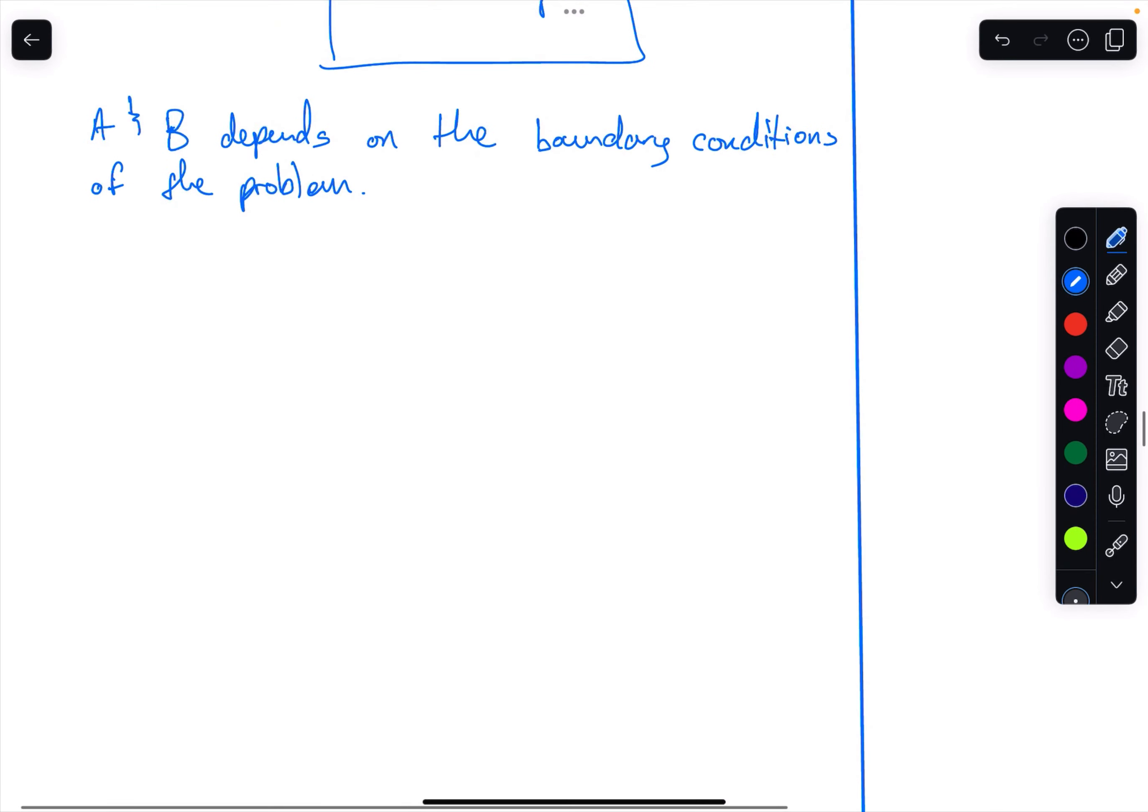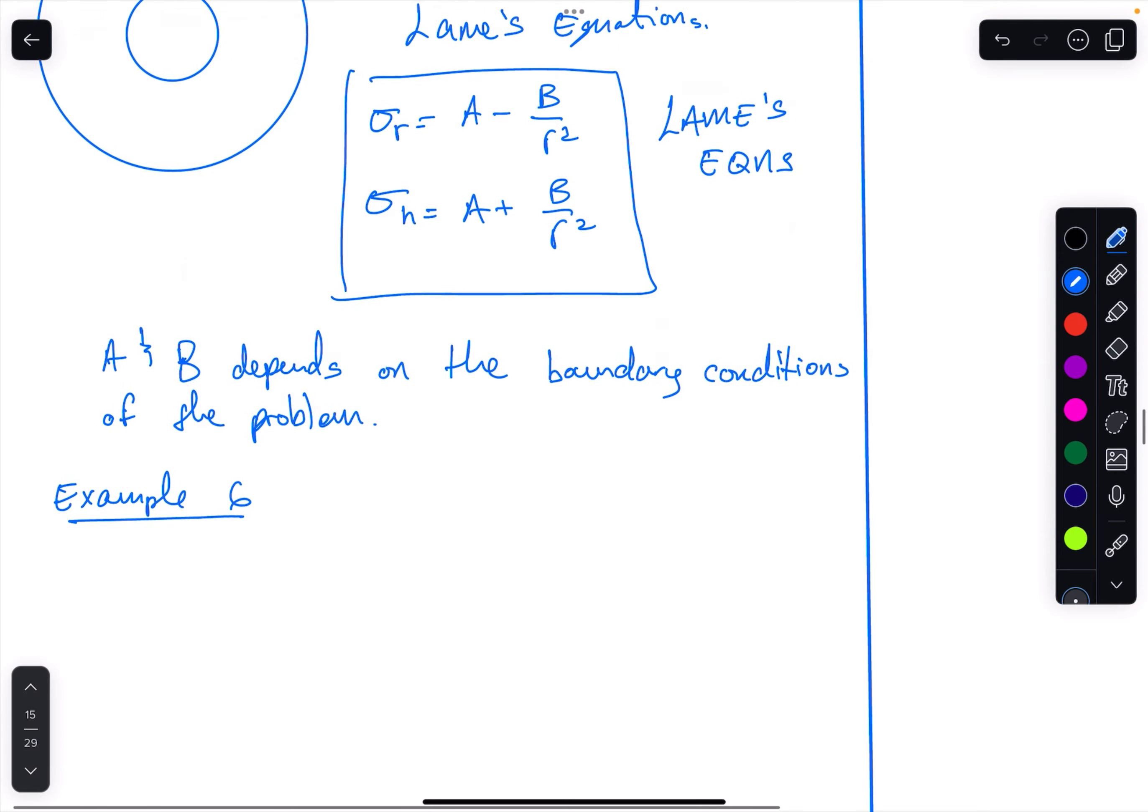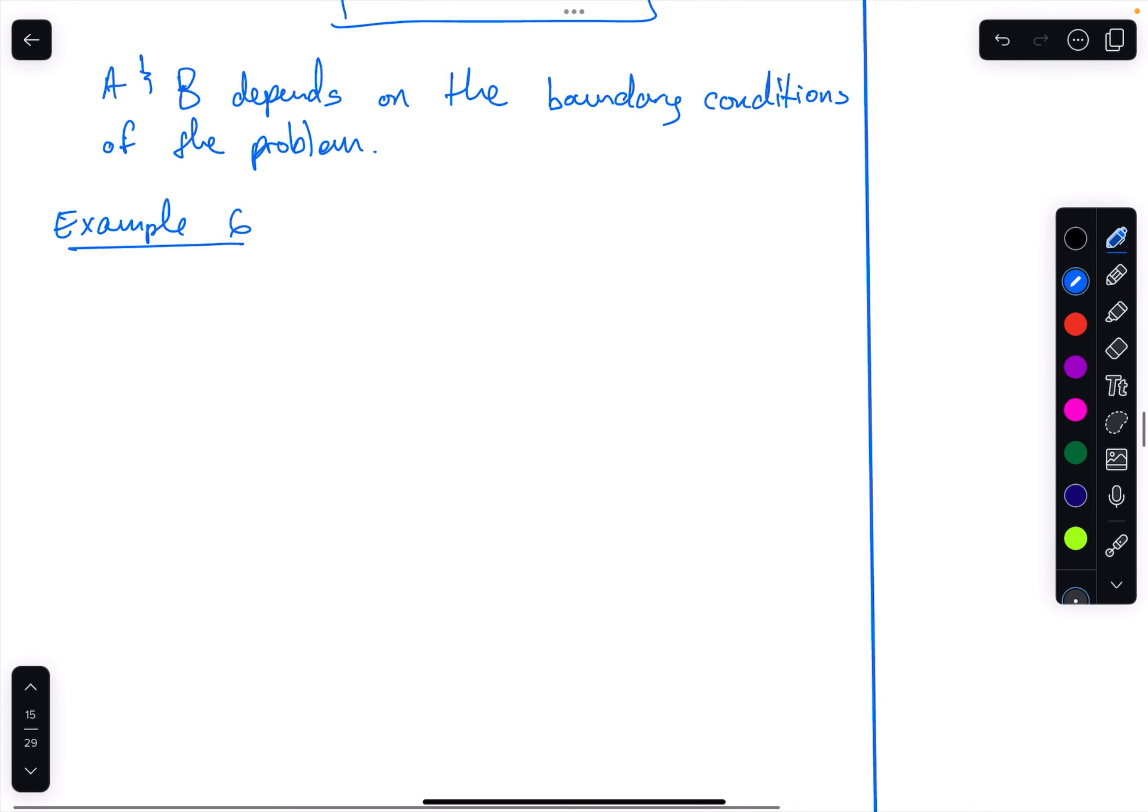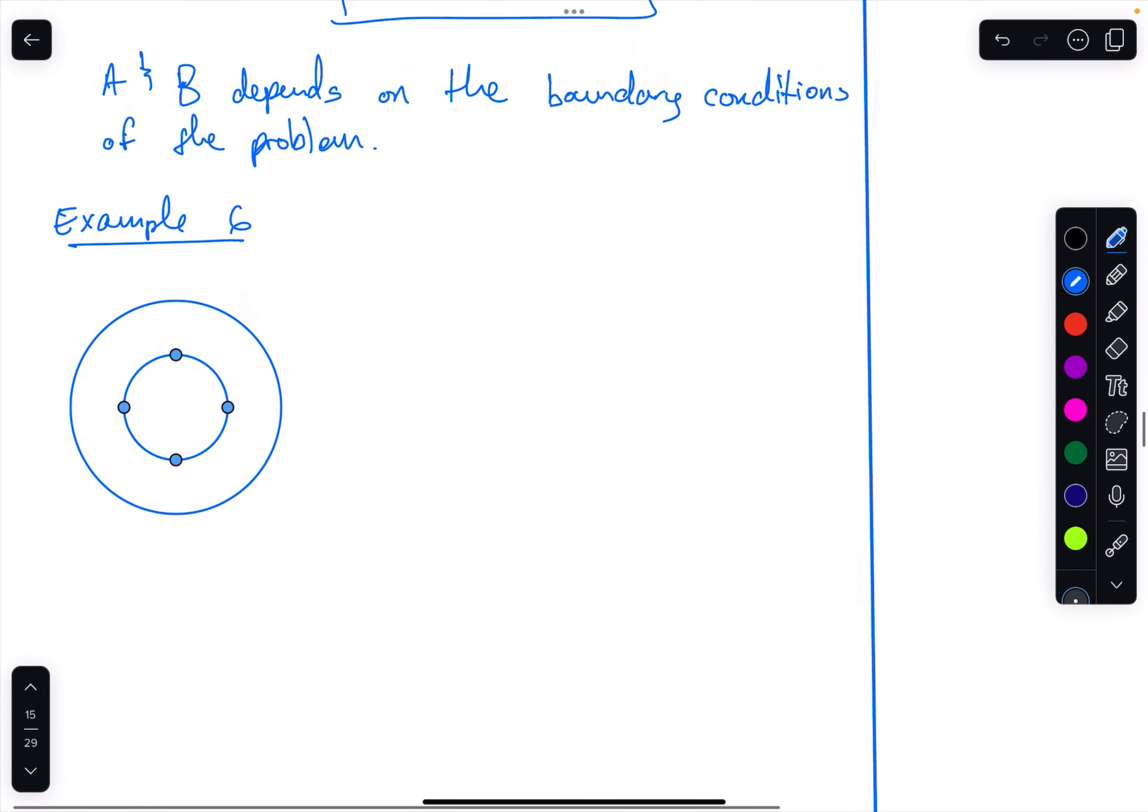We're going to have a look at example 6 and see how we're going to use Lame's equation. Example 6, we have a thick-walled pressure vessel with an internal diameter Ri and an outer diameter Ro.